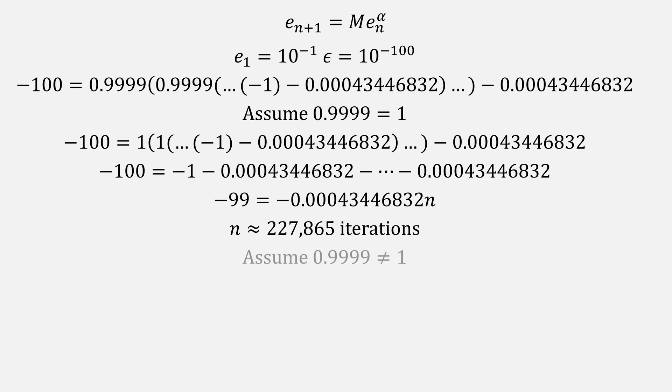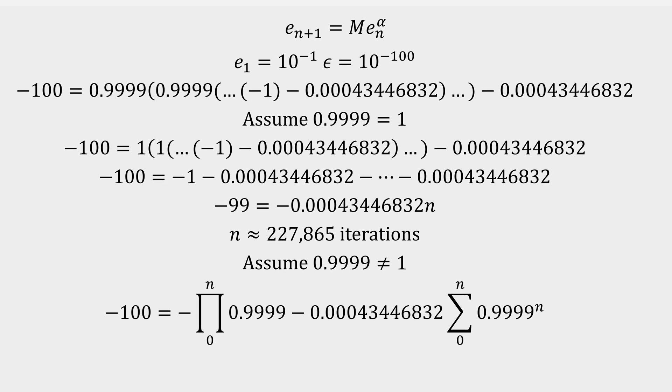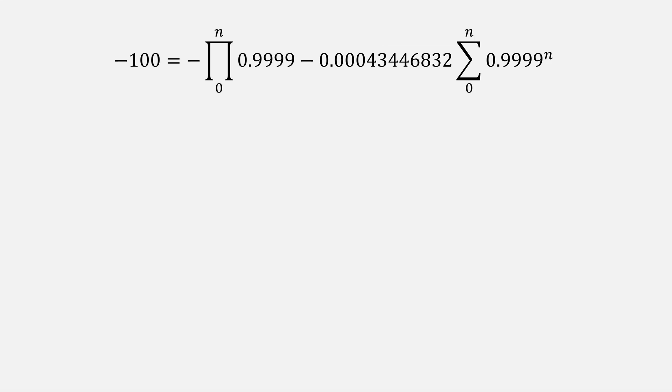To do it the right way, we assume that 0.9999 is not equal to 1. Therefore, we get a function that looks like this, but don't panic. Let's clean up a little, and using this product on the left, this eventually reaches 0 in the limit, so we'll actually ignore it. This greatly simplifies how we'll solve for n.